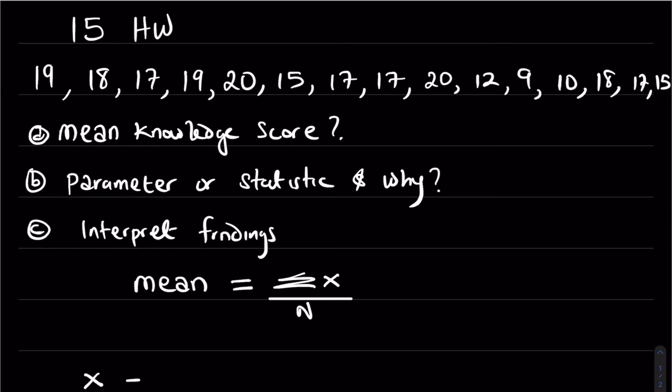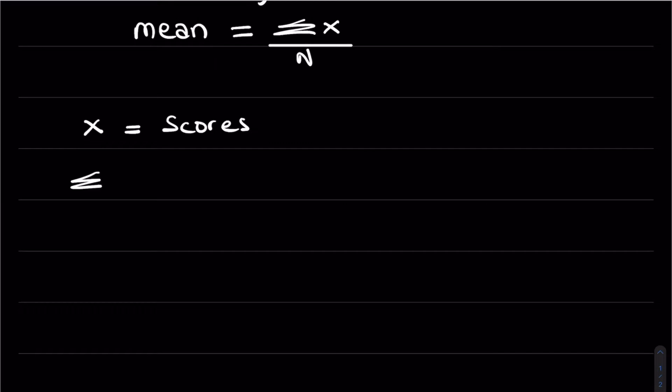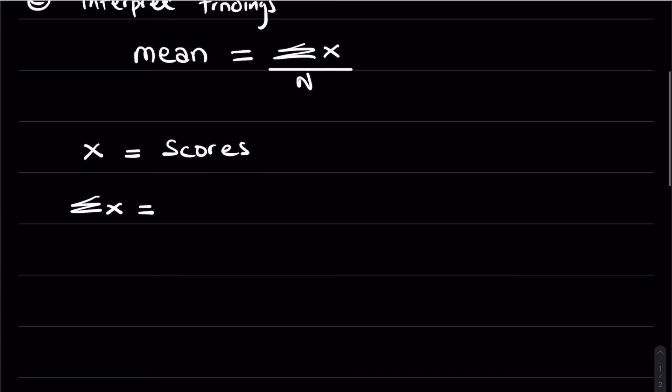Here x is the scores. So we just add up all the values of the scores to get the summation of x, and here n is the number of health workers which is equal to 15.